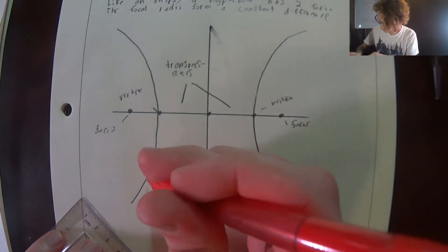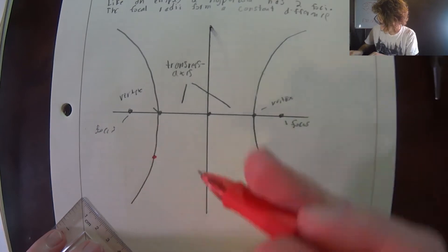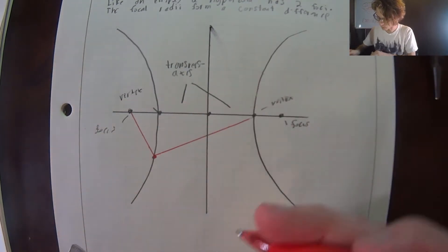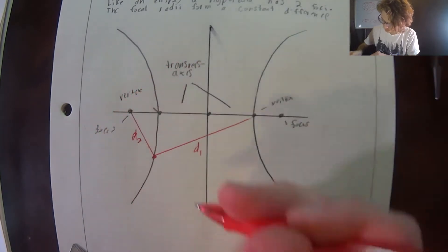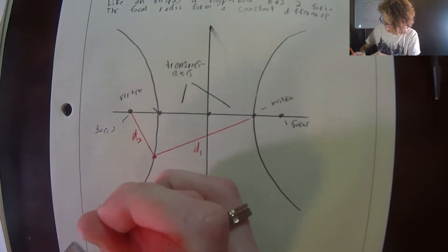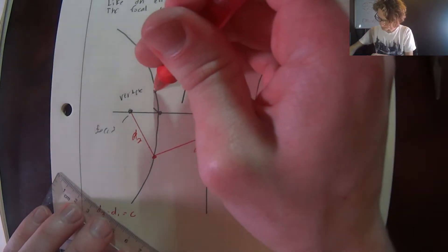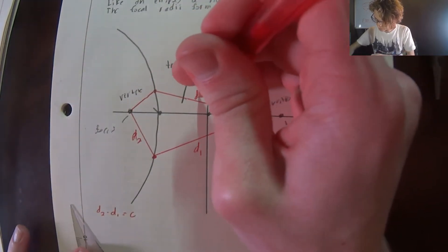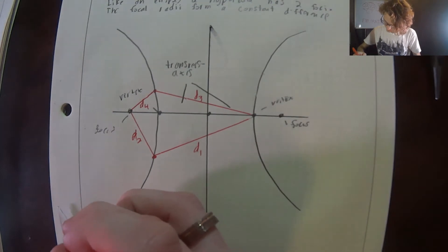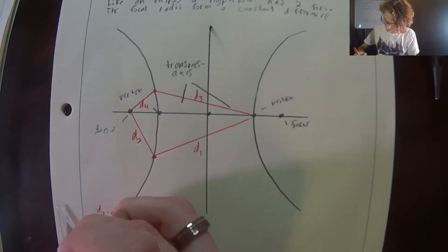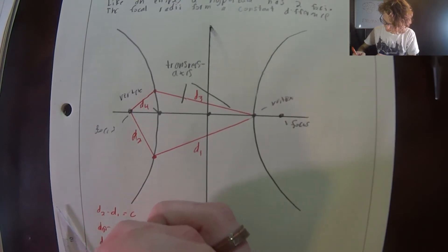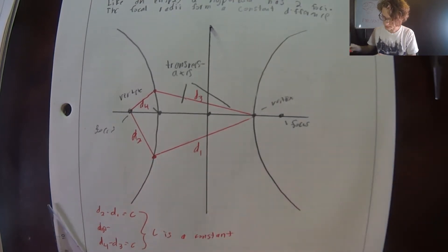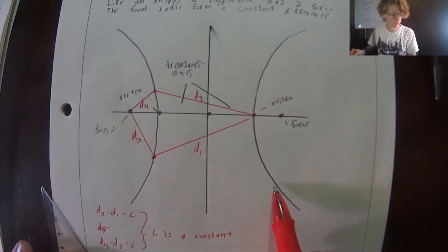Let's pick any point on the graph. This distance and this distance are the two focal radii — call this d1 and d2. So d2 minus d1 is equal to a constant we'll call c. Let's pick another point. We have this distance and this distance — call this d3 and d4. So d4 minus d3 is also equal to the same constant c. That goes for any point anywhere on the hyperbola.